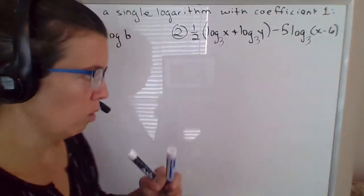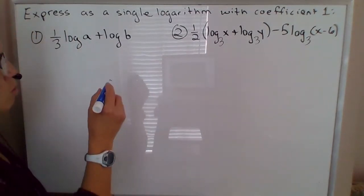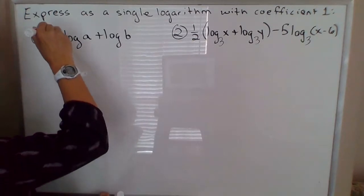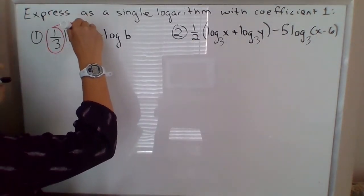So working backwards here, one of the first things we'll do will be to take these coefficients and fold them back up into the exponent.